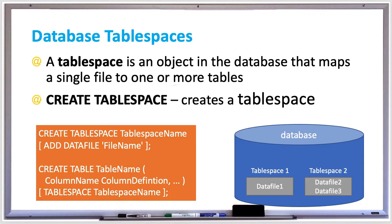A tablespace is where a table gets stored. A tablespace is usually a file that maps to one or more tables. It provides a layer of abstraction between physical and logical data and allocates storage for all DBMS managed segments. A tablespace can be referred to by name when creating database segments.